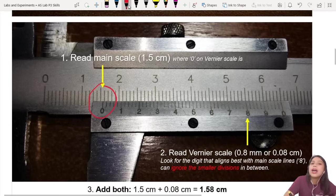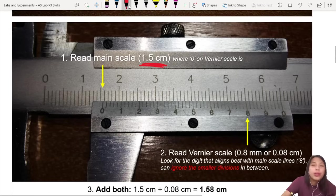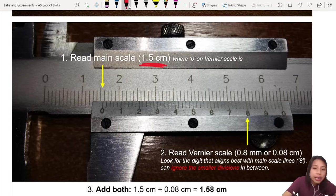Step two, okay, you know it's 1.5, then you do your vernier scale. Now this is kind of the part where you have to have good eyesight, okay? You need to see where the vernier scale aligns with the top.